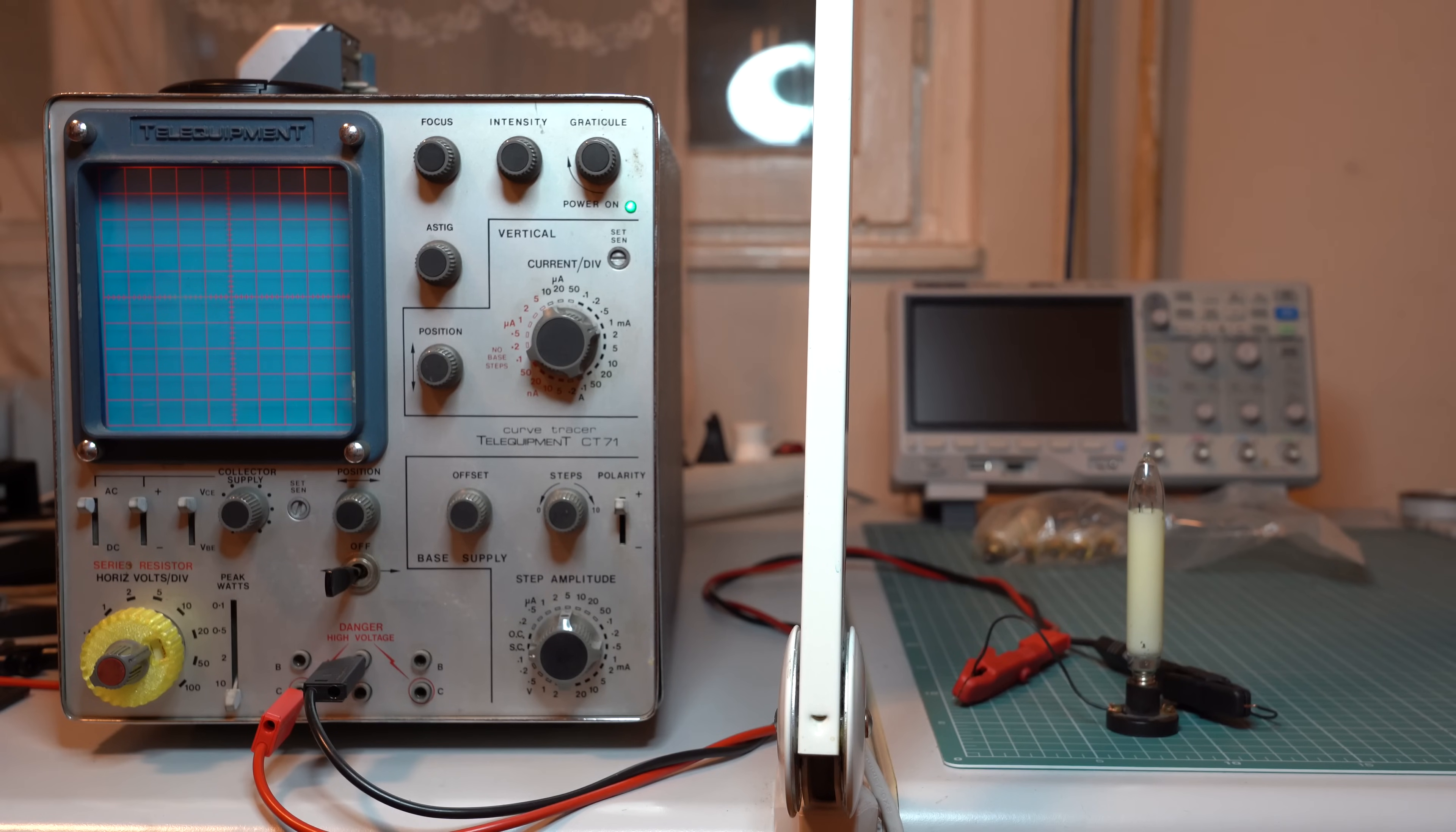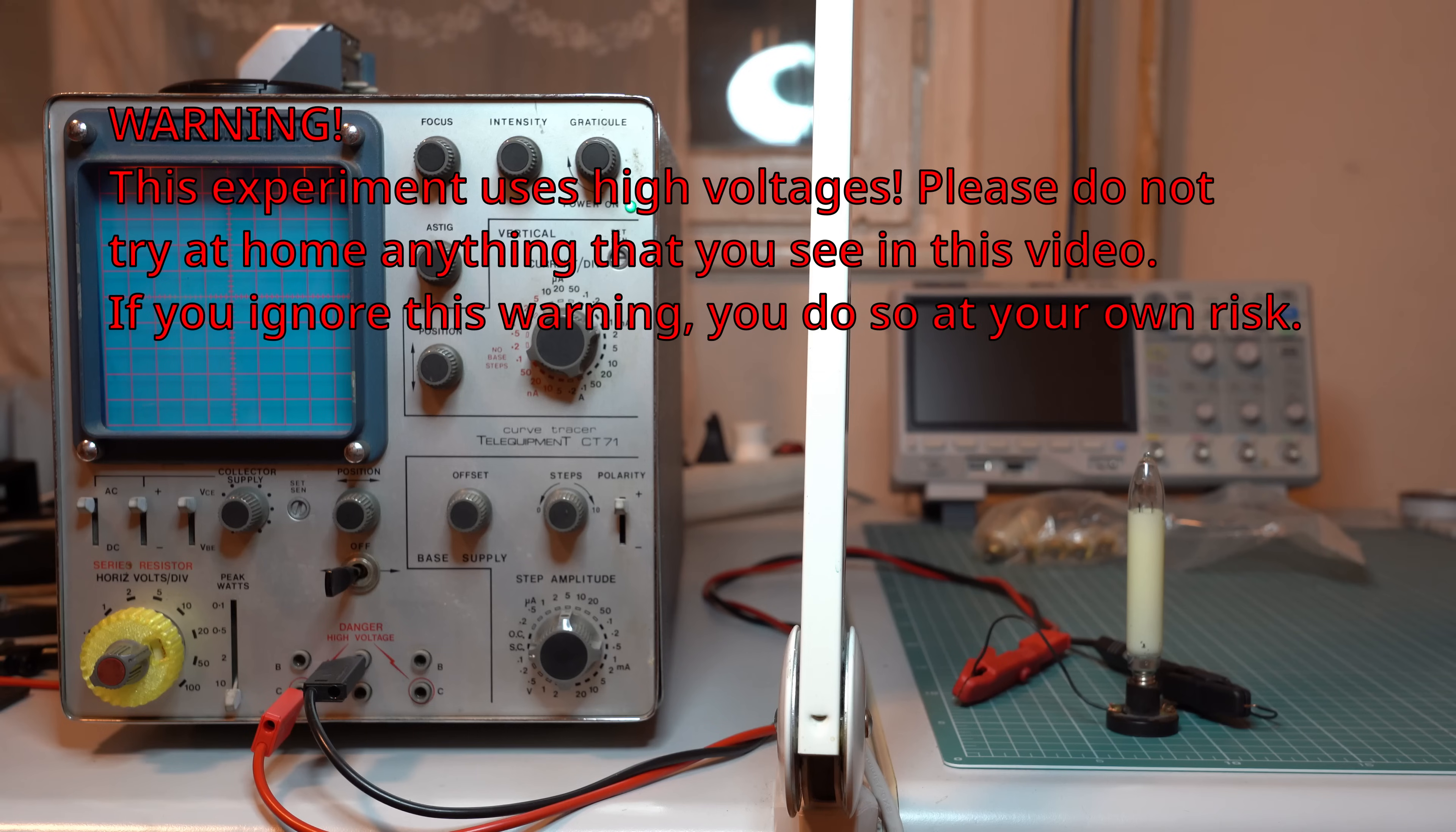But before starting the experiment I would like to say a few words about safety. As you can see the curve tracer says danger high voltage right here and the message is there for a reason. That's because the curve tracer is a really dangerous piece of test equipment. It can go up to 100 volts per division and it covers about 10 divisions, which means that it can easily produce about 1000 volts. So this means that you shouldn't try this experiment at home. You've been warned and if you do so you do it at your own risk.